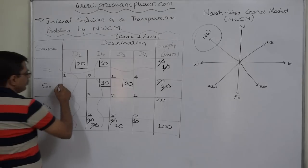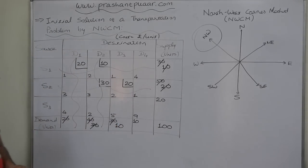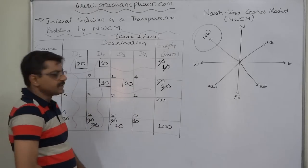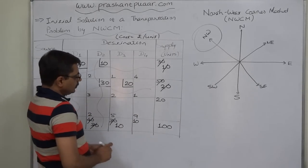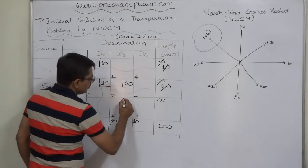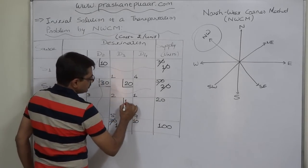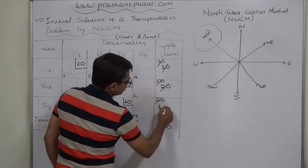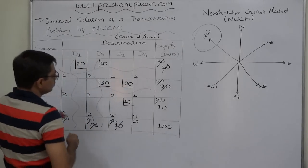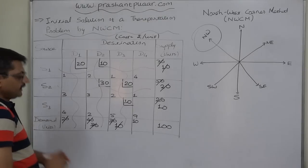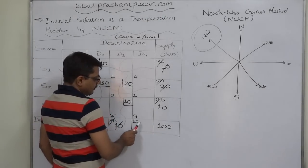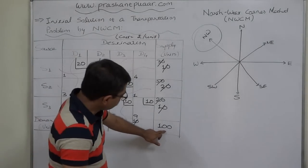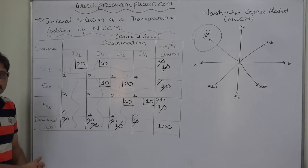We cancel source S2 since no supply remains. Source S3 has 20 units of supply available, and destinations D3 and D4 each have demand of 10 units. Applying the Northwest Corner Method: cell 33 has demand 10 and supply 20 — whichever is lower is 10 — so we allocate 10 units to D3, satisfying its demand. S3 still has 10 units. We cancel column D3, and in the last remaining cell, we allocate the final 10 units from S3 to D4, satisfying all demand.